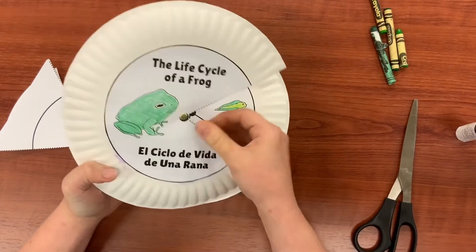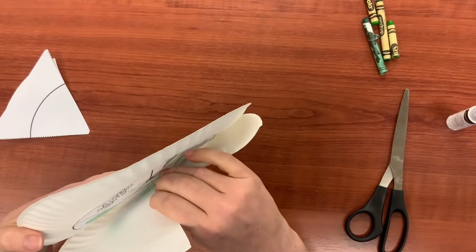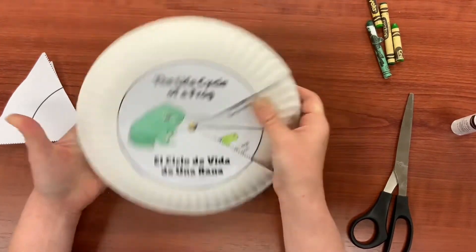Next, poke the metal brad through the black dot at the center of each plate. Going one plate at a time is helpful if you're having trouble pushing the brad through.